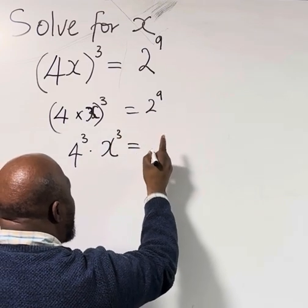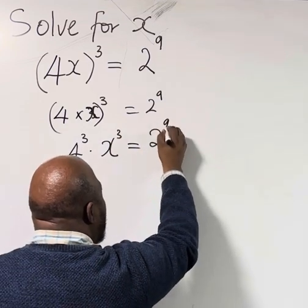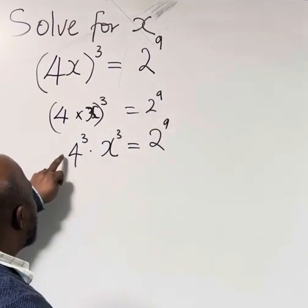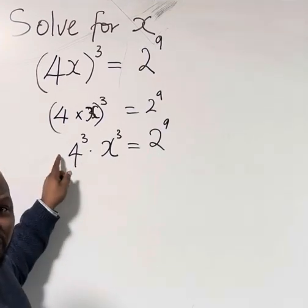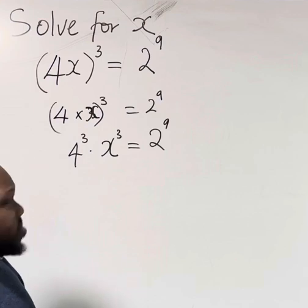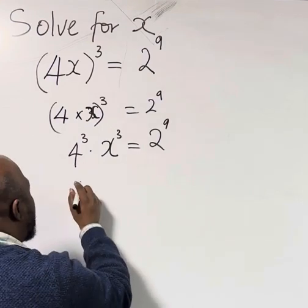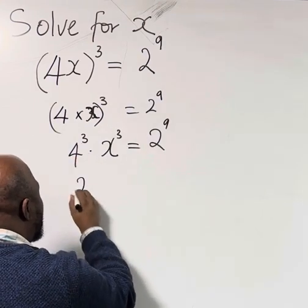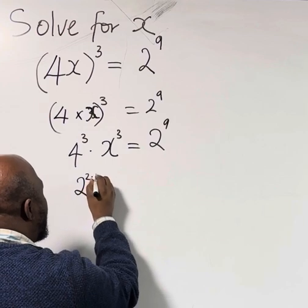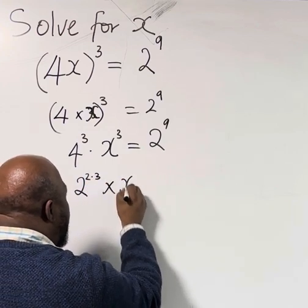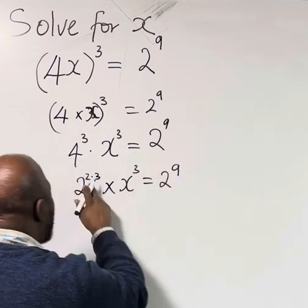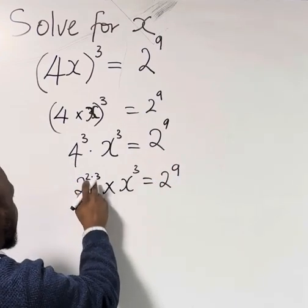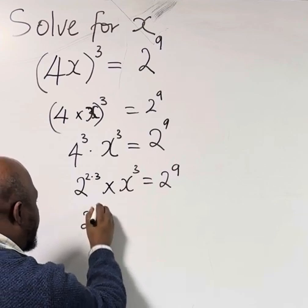We have base 2 here and this is 4, so we can change this to base 2 also and collect like terms. This will now turn to 2^(2×3) × x³ = 2⁹. So this is 2 multiplied by 3 is 6—that's 2⁶ × x³ = 2⁹.